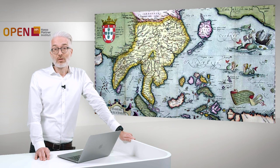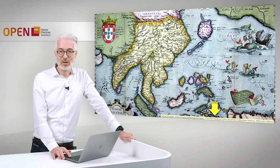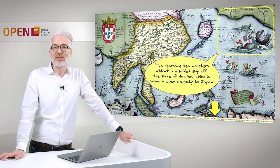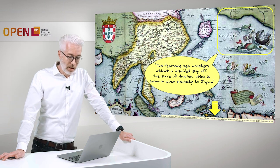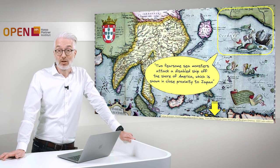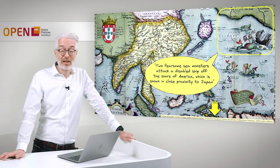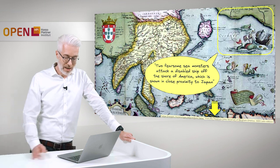One way to do that is, of course, it could be related to a larger source, where you find a source also for that, and you might find it there to be described as: two fearsome sea monsters attacked a disabled ship off the shore of America, in which America is shown in close proximity to Japan. But to get this information, it's not found here on the map, so somebody has to provide additional information for what you see there. And this usually is referred to as an annotation.